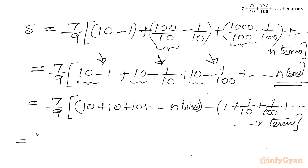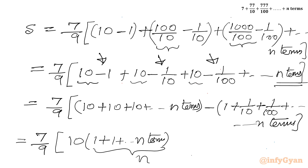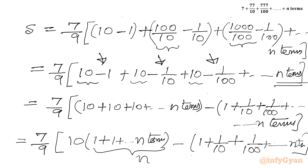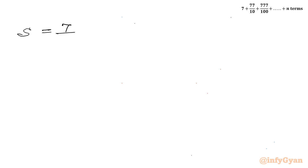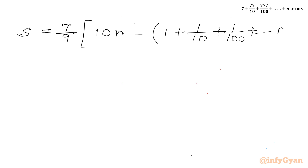Now I will take 10 common from the first bracket, so it becomes 10 times n — since there are n ones summing to n. Then minus bracket 1 plus 1 over 10 plus 1 over 100 up to n terms. So we can write S is equal to 7 over 9 times 10n, minus bracket 1 plus 1 over 10 plus 1 over 100 up to n terms.